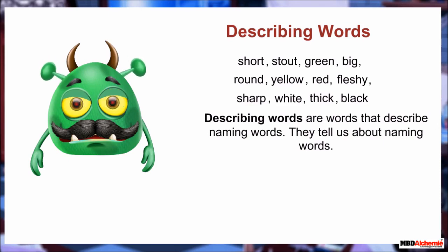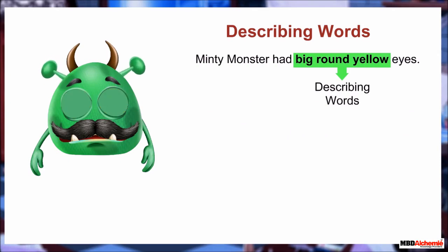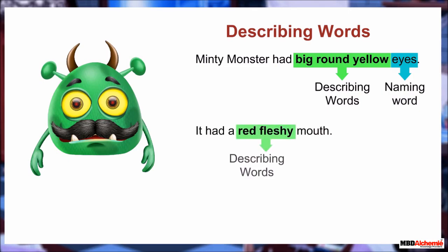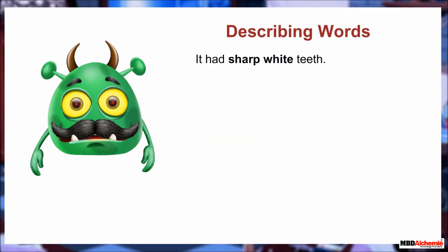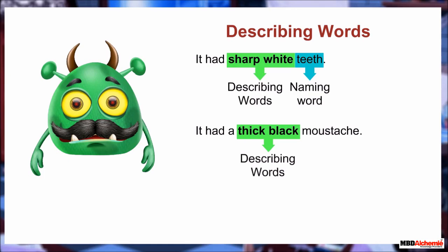Describing words are words that describe naming words. They tell us about naming words. For example: Minty Monster had big round yellow eyes — the describing words 'big,' 'round,' and 'yellow' describe Minty's eyes, and 'eyes' is a naming word. It had a red fleshy mouth — the describing words 'red' and 'fleshy' describe Minty's mouth, and 'mouth' is a naming word. It had sharp white teeth — the describing words 'sharp' and 'white' describe Minty's teeth, and 'teeth' is a naming word.